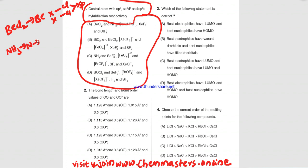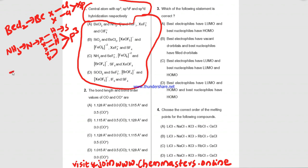Now take ammonia, NH3. The central atom is nitrogen, which has five valence electrons. It makes three sigma bonds with three hydrogens and has one lone pair of electrons, so ammonia has sp3 hybridization. Next, consider I5−. Iodine is the central atom and contains seven valence electrons.